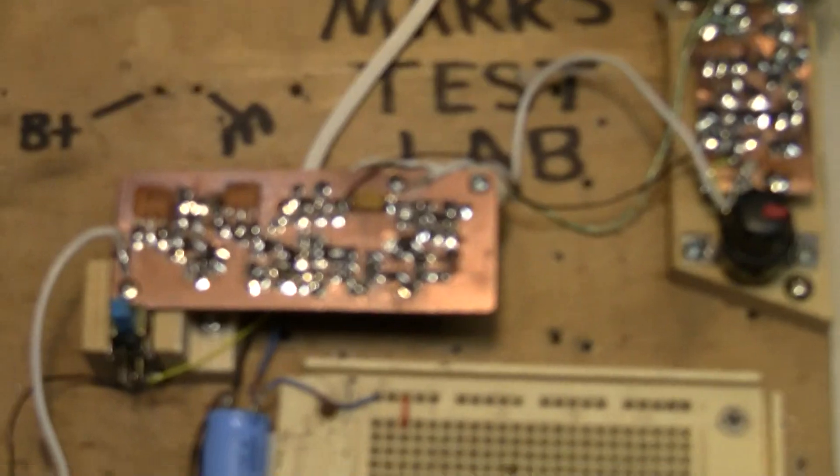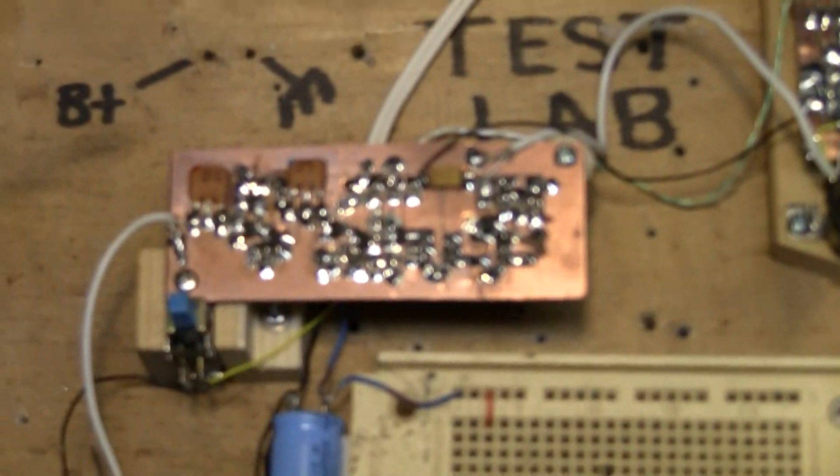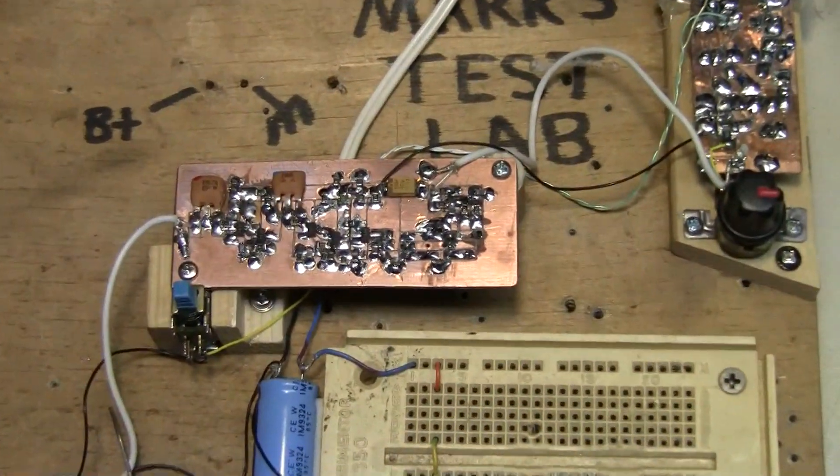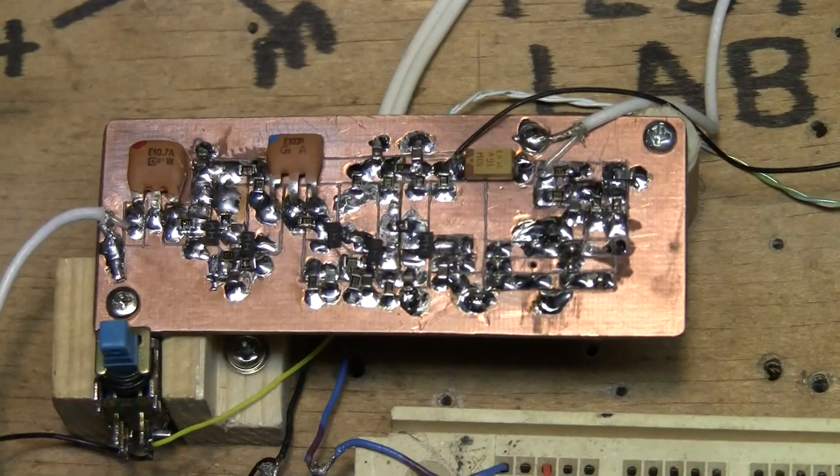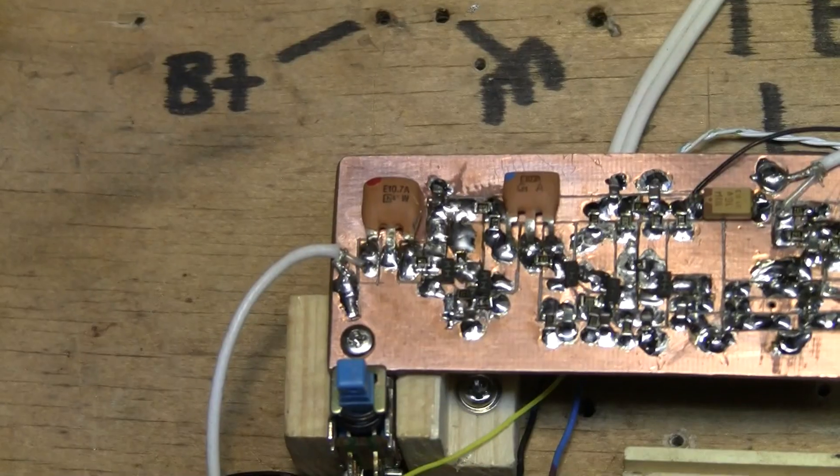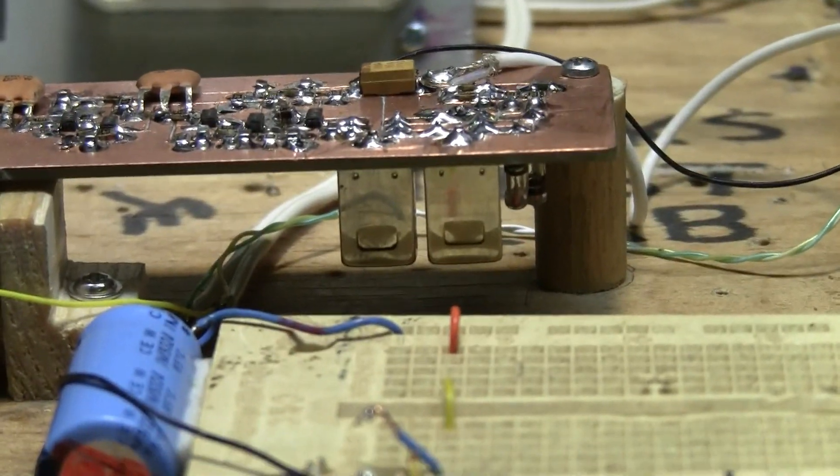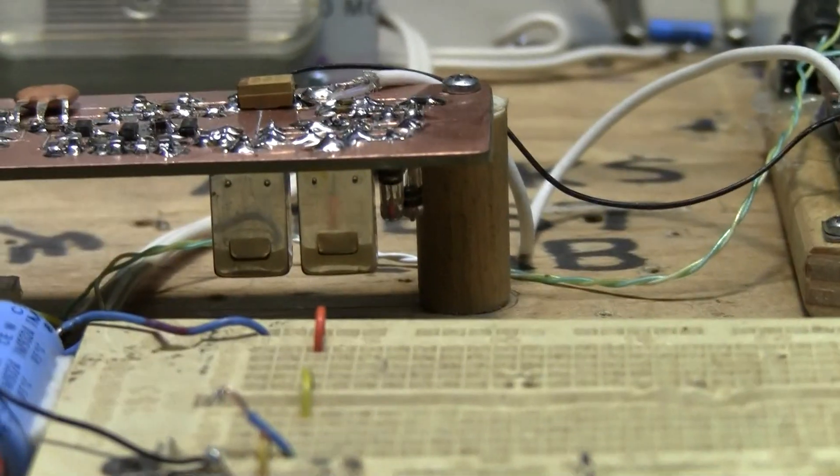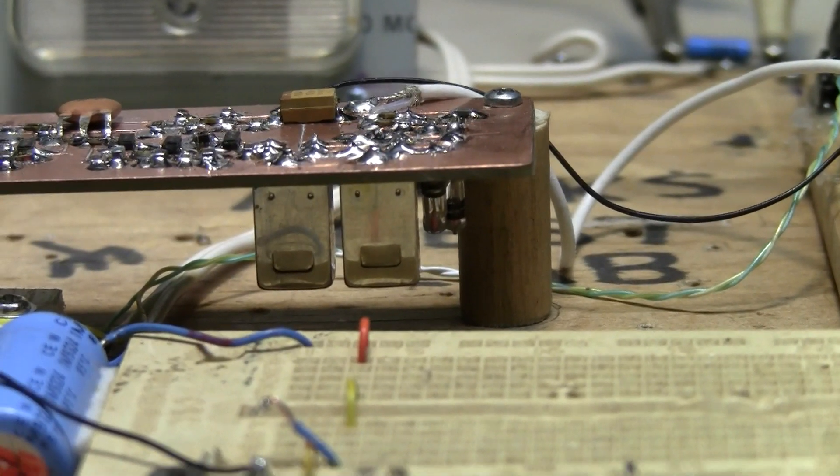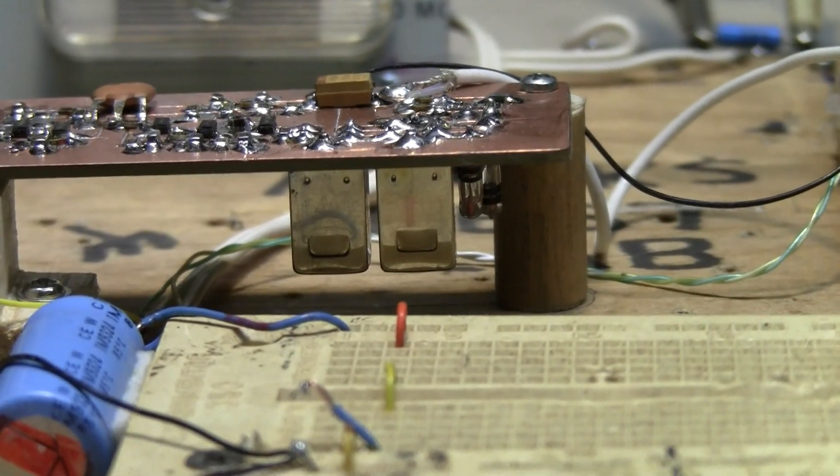And I just recently built an IF amplifier which is right here. See I got two bandpass filters on here, IF transformers down here on the underside here and the diode is underneath there for rectifying the audio out of the waves.